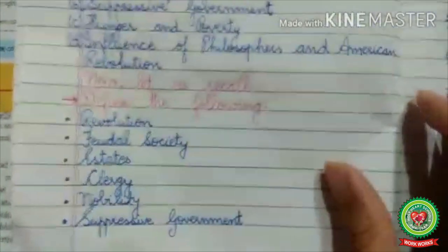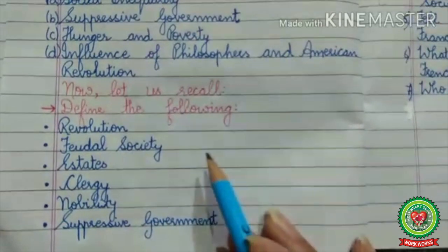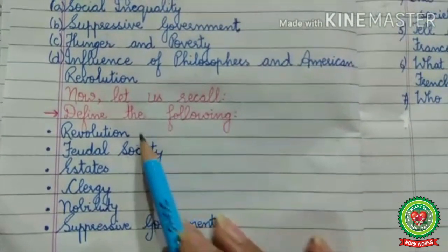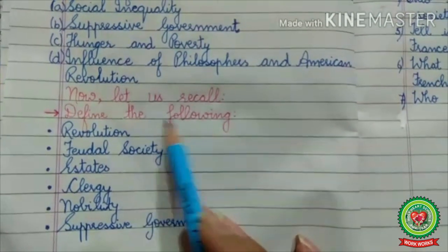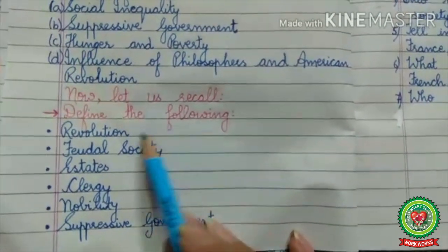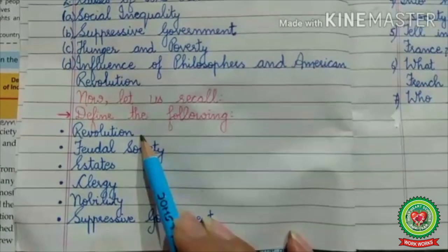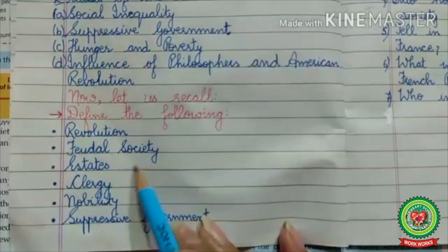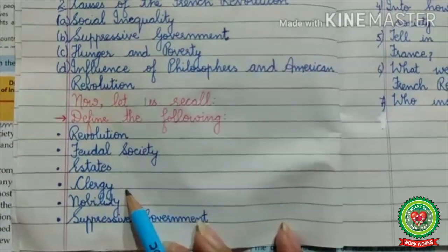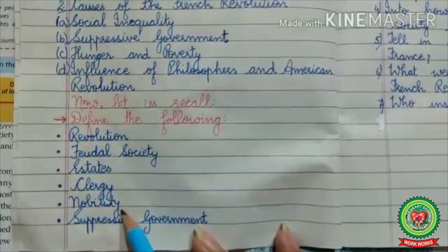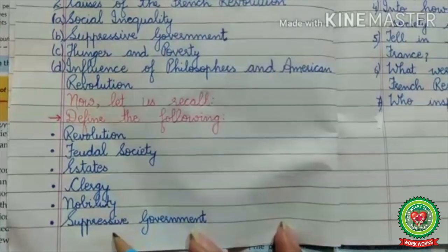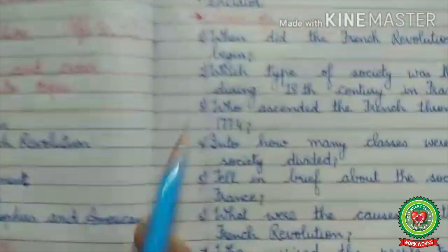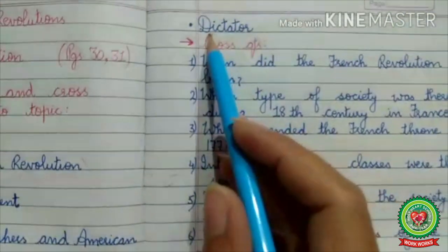Now let us recall some important terms. You have to define the following: Revolution, feudal society, estates, clergy, nobility, suppressive government, and dictator.